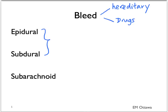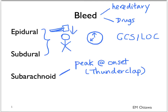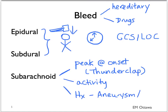For epidural and subdural bleeds, we need to know whether there is a history of head trauma, when it might have occurred, the GCS and level of consciousness at the time of the incident compared to now. For subarachnoid bleed, we need to know the onset of the headache, whether it peaked at the time of occurrence — also known as a thunderclap headache — the activity of the patient at the time, whether exertion or at rest, and whether the patient or their family has a history of brain aneurysms or polycystic kidney disease.